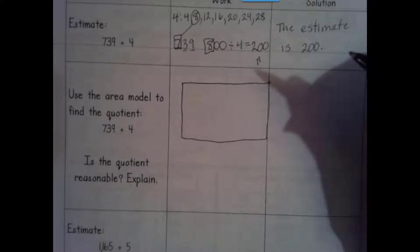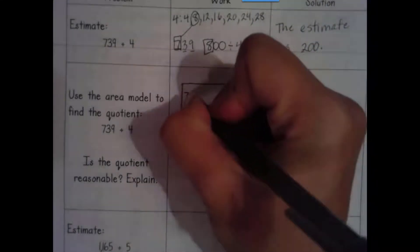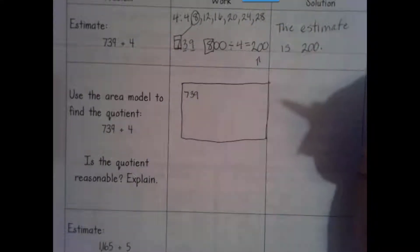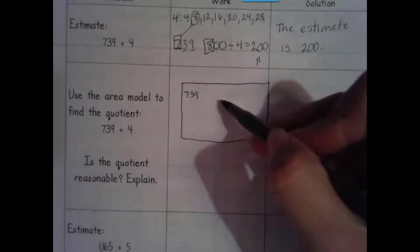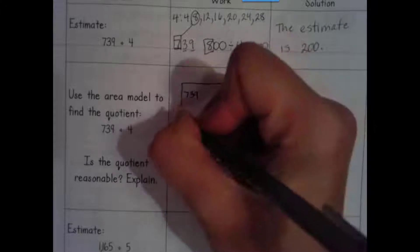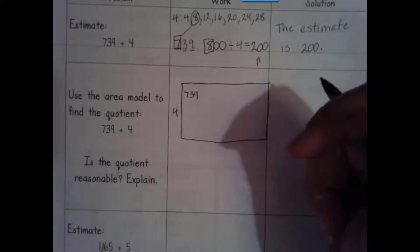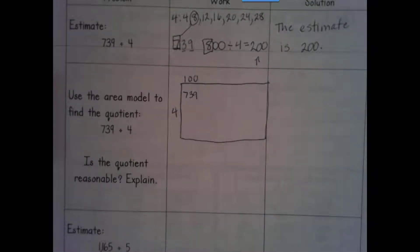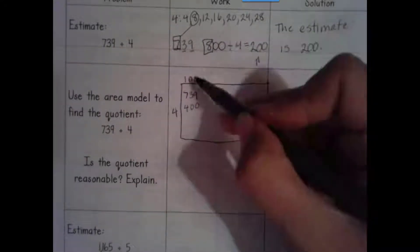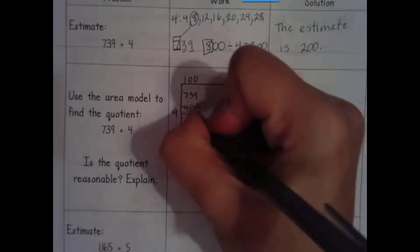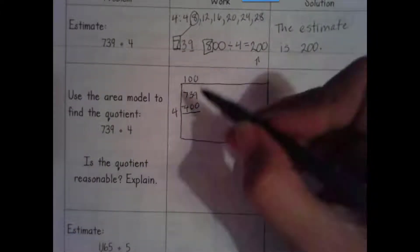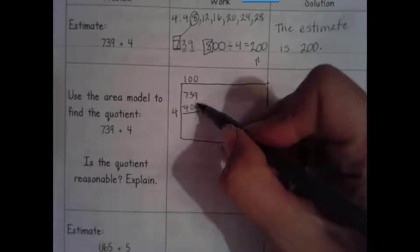I'm going to make one big rectangle and put 739 inside. Don't make it too big because we need room in case we need to take more groups out. I'm dividing into groups of 4, or 4 equal groups. I'm going to take a large group of 4s out — I'll multiply by 100 and get 400. 100 times 4 is 400.